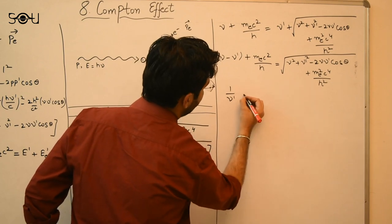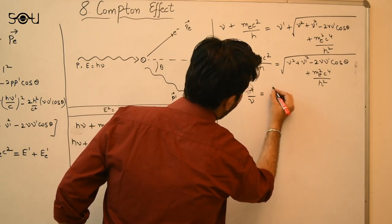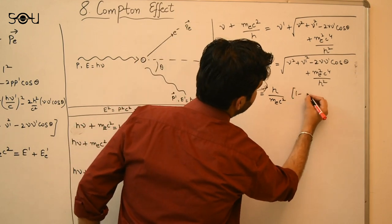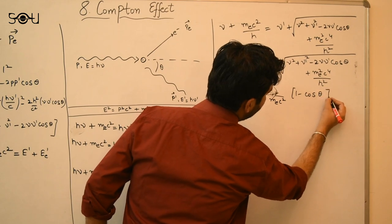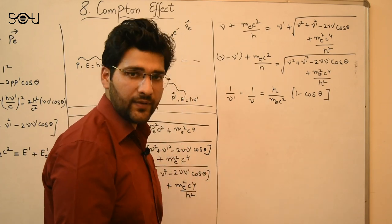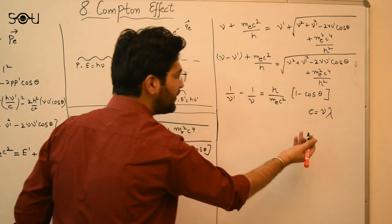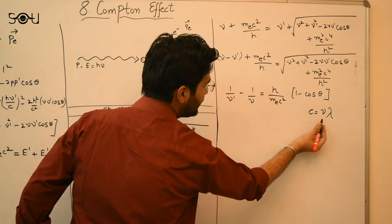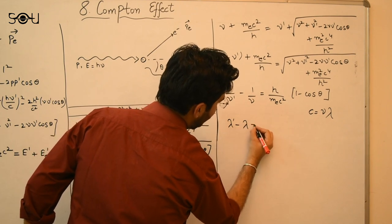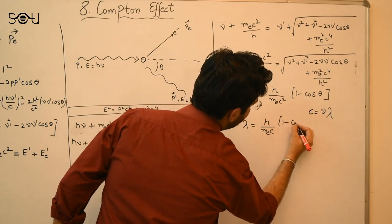This is the relationship in terms of frequency. To convert to wavelength, we use c = νλ. Substituting this relation, we obtain the final Compton effect formula: λ' − λ = h/(m_e·c) · (1 − cosθ). This is the final relationship of the Compton effect.